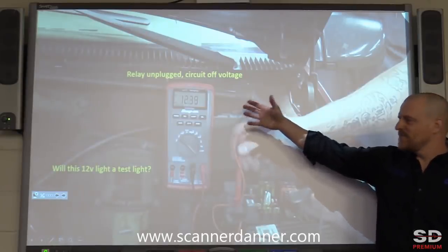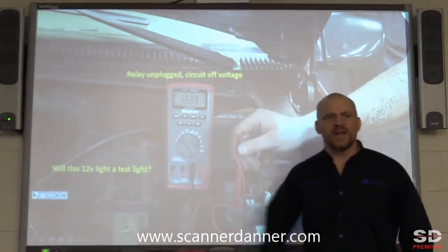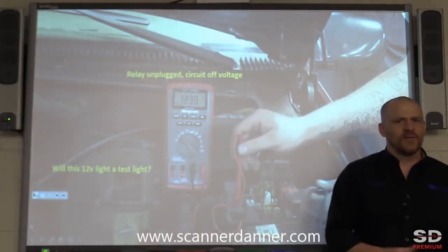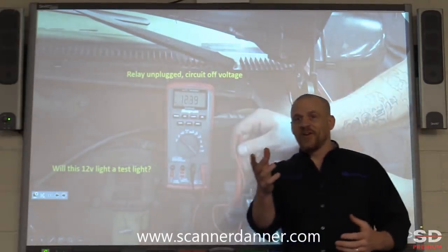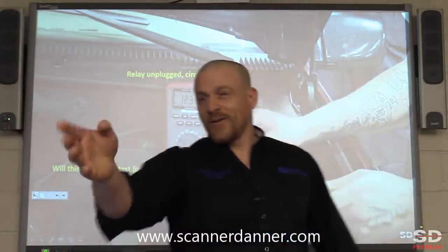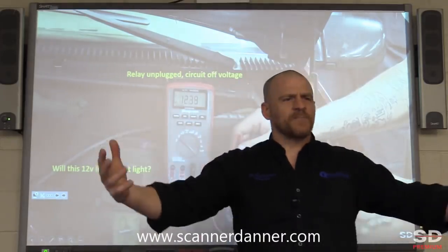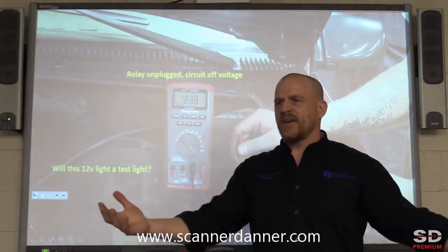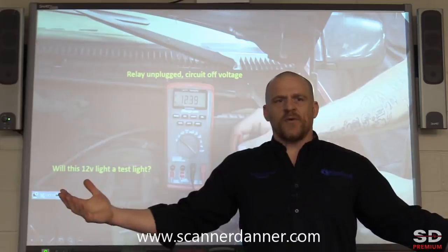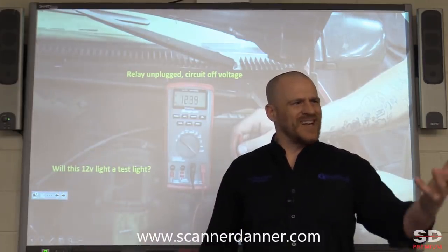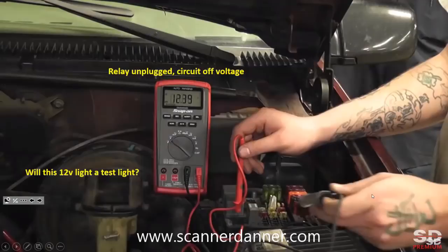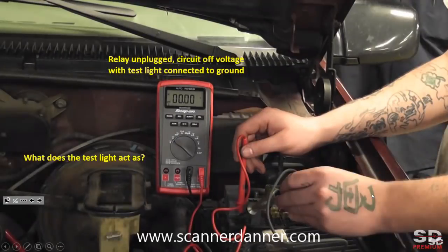What is this? My question to you is: will it light a test light? Who said no? Of course it's not going to — because this is a bias voltage — but at face value, wouldn't we all say yes? I would expect this 12 volts to light a 12-volt test light. It absolutely should. So I'm going to show you — I'm just touching a test light on that pin connected to ground.